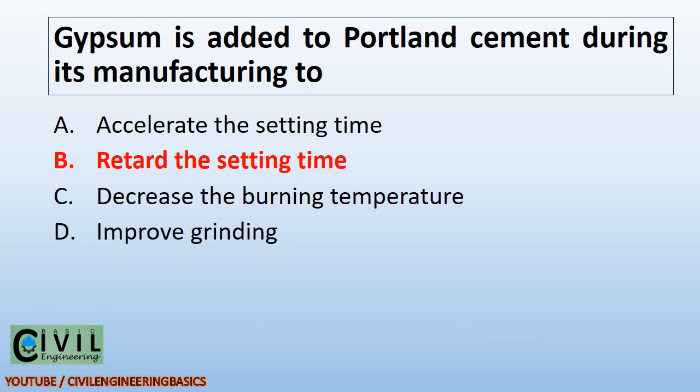Gypsum is added to Portland cement during its manufacturing to retard the setting time.